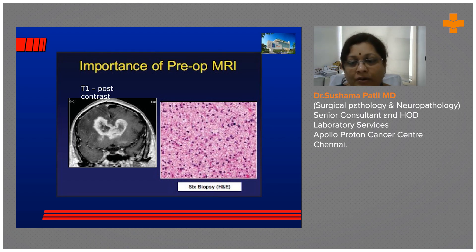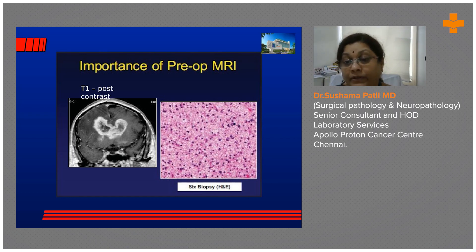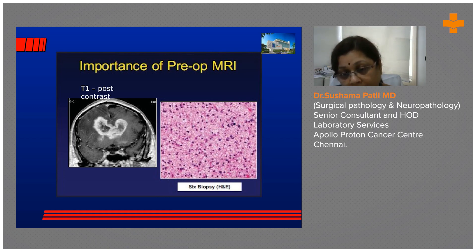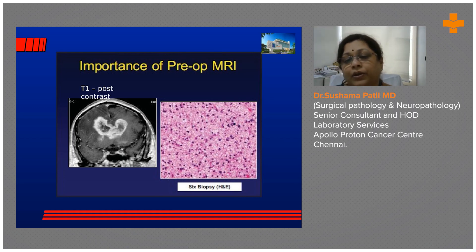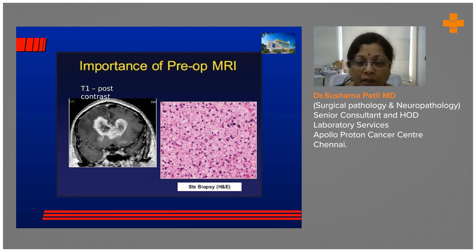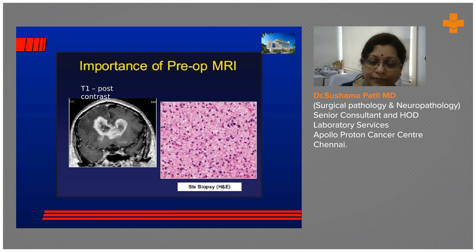The biopsy taken by the surgeon is not representative. We have to tell the surgeon there is a discordance between the sample taken and what the tumor actually looks like on imaging. If you are aware that such discrepancies exist, you can guide the surgeon intraoperatively to obtain a better sample and resolve the discrepancy.